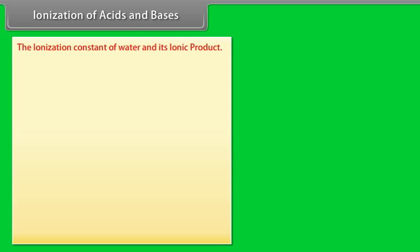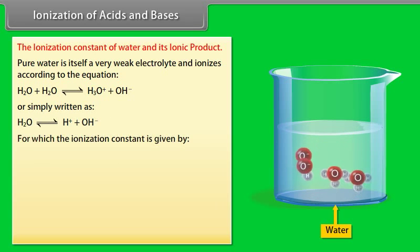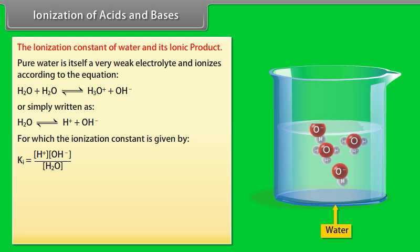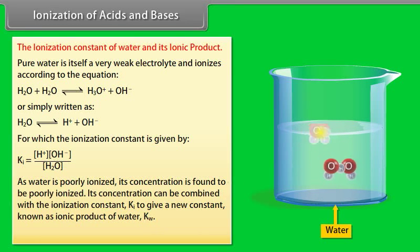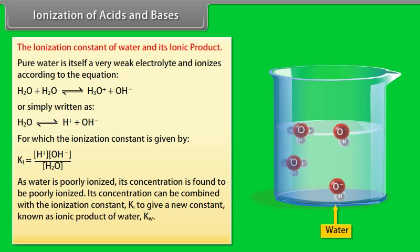Ionization of acids and bases — the ionization constant of water and its ionic product: Pure water itself is a very weak electrolyte and ionizes according to the equation. The ionization constant Ki is equal to the concentration of H⁺ times the concentration of OH⁻ divided by the concentration of H₂O. As water is poorly ionized, its concentration can be combined with Ki to give a new constant known as the ionic product of water, Kw.